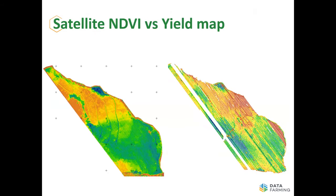When we look at yield mapping, there are a few issues: errors with the moisture meter, blockages, or people doing random driving. But it is the final measure. Often we see that satellite imagery reflects nicely in the yield data — it's a good tool to help with that. Not all the time, but most of the time.